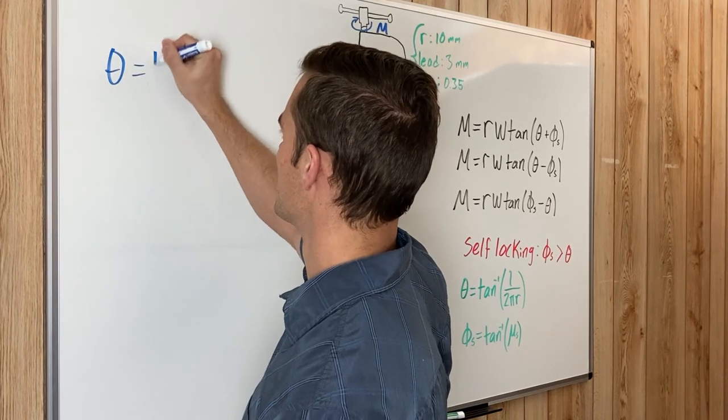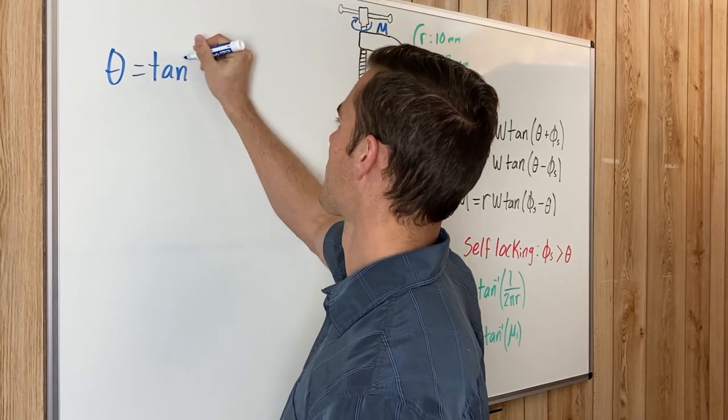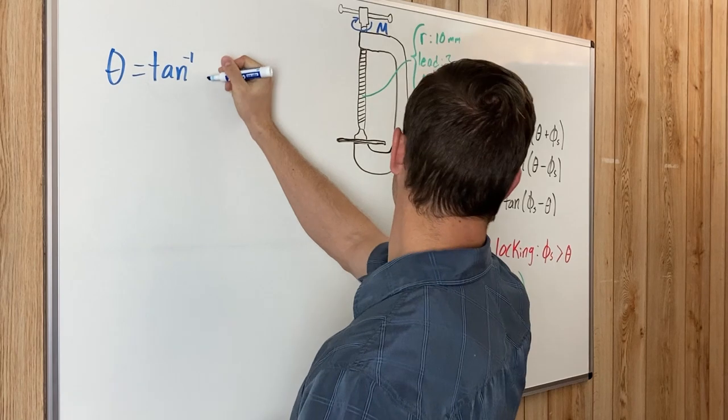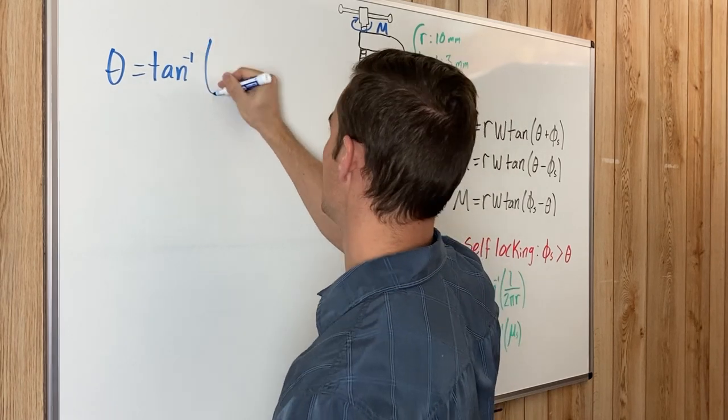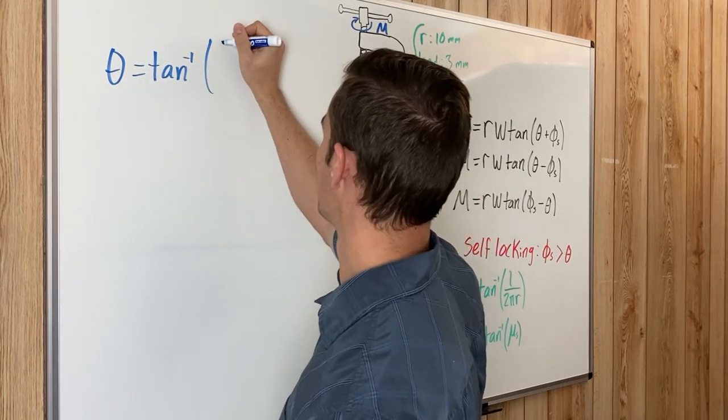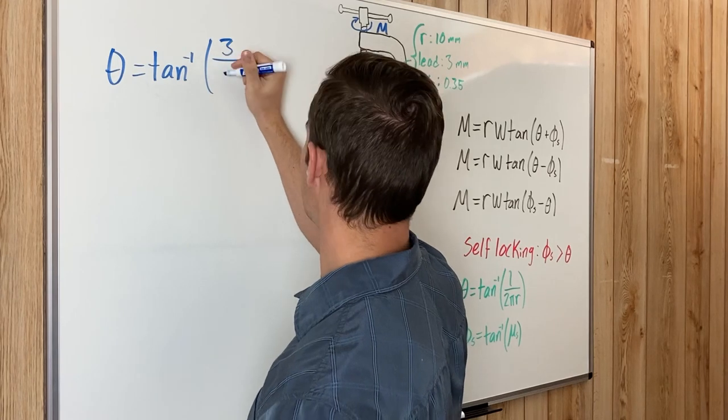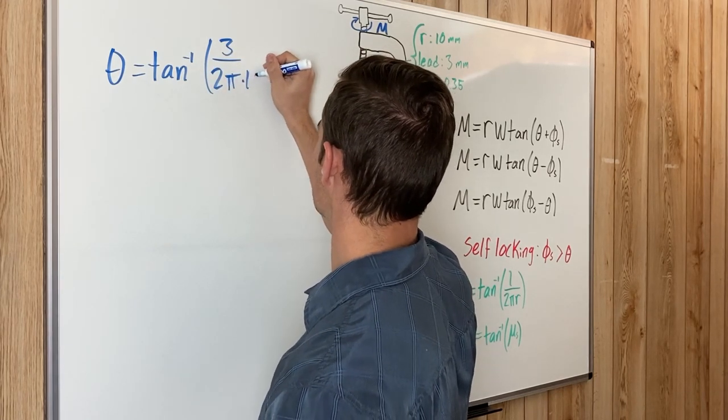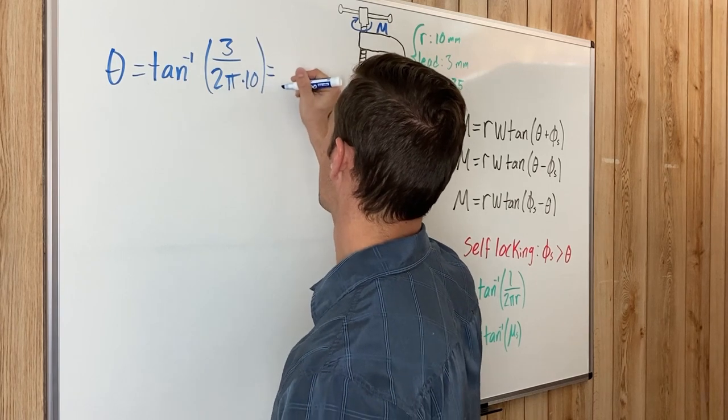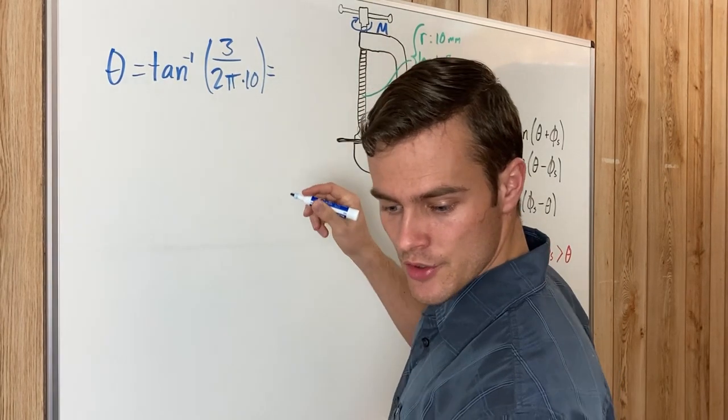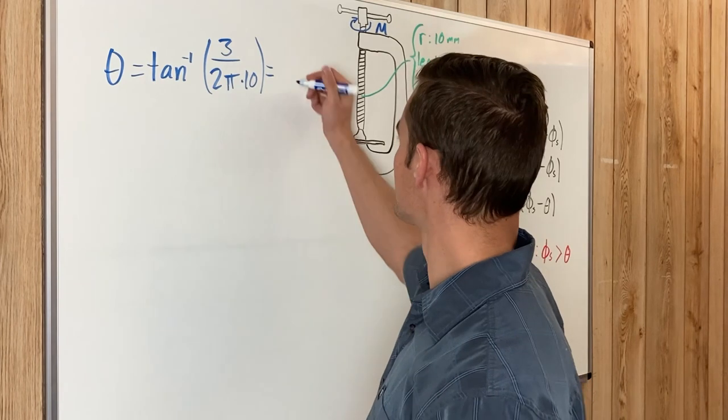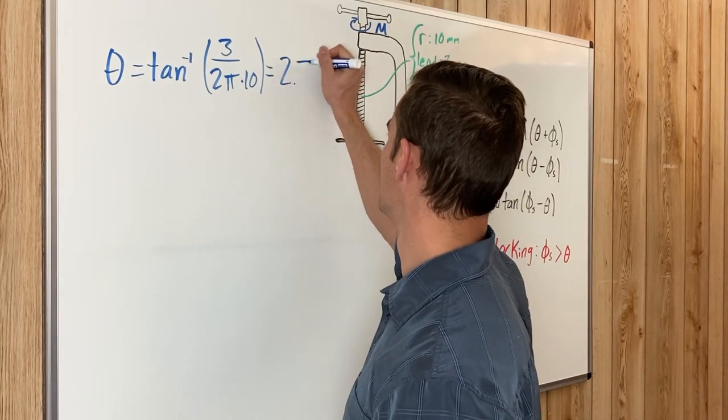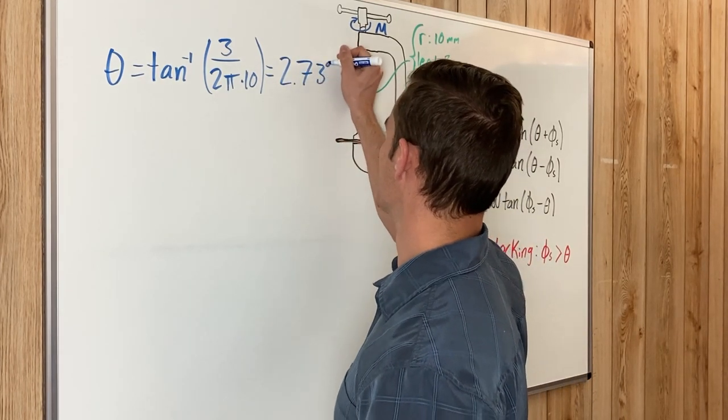Theta is going to equal the arc tangent of the lead, which we're given is three millimeters, divided by two pi r. The radius is 10, and that comes out to be 2.73 degrees.